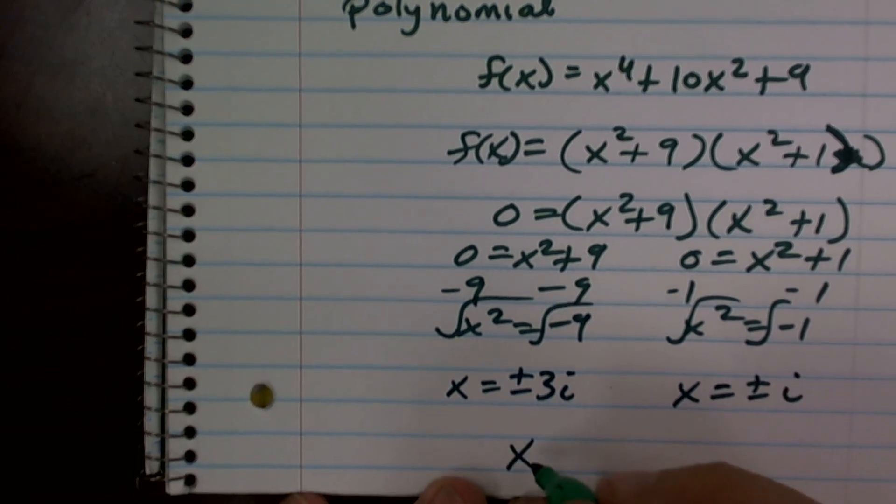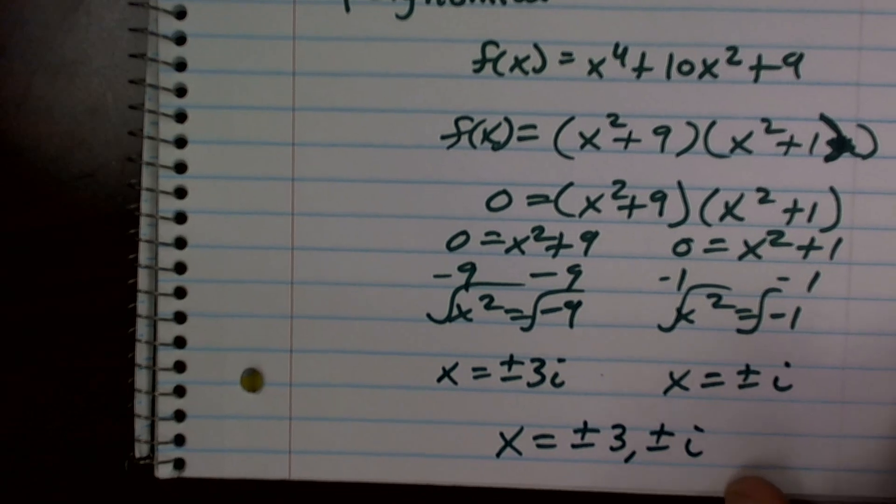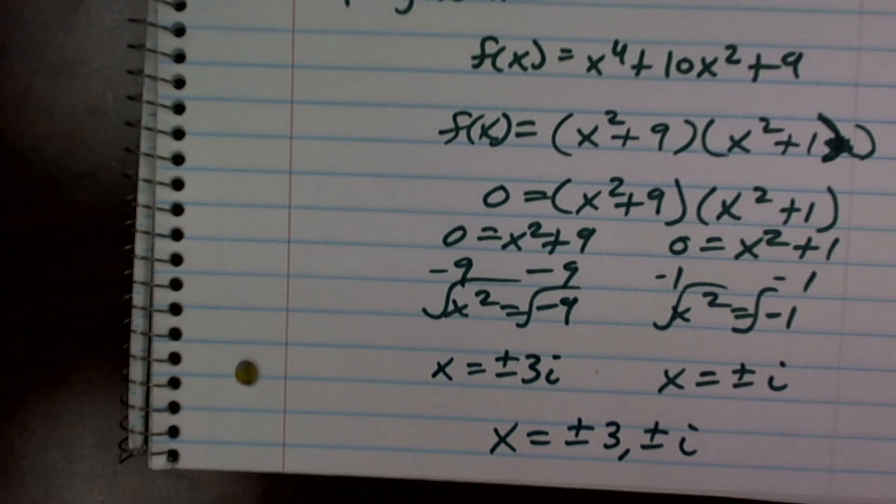So therefore, all the zeros of my polynomial are going to be x equals plus or minus three i, and plus or minus i. So there you go, ladies and gentlemen. That's how you factor and find all the zeros of a polynomial.